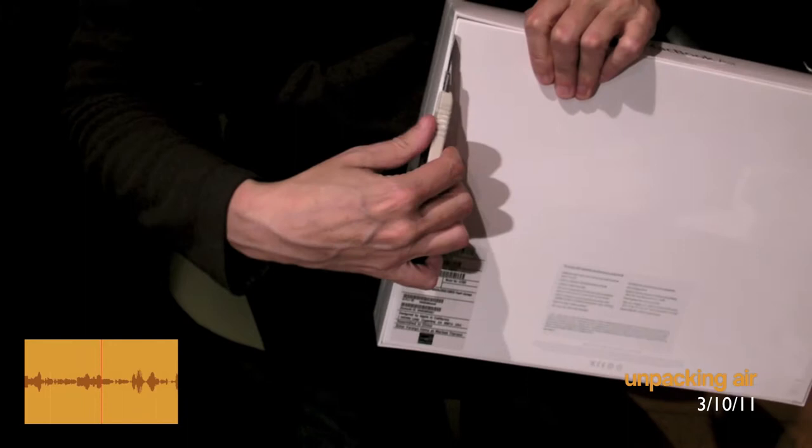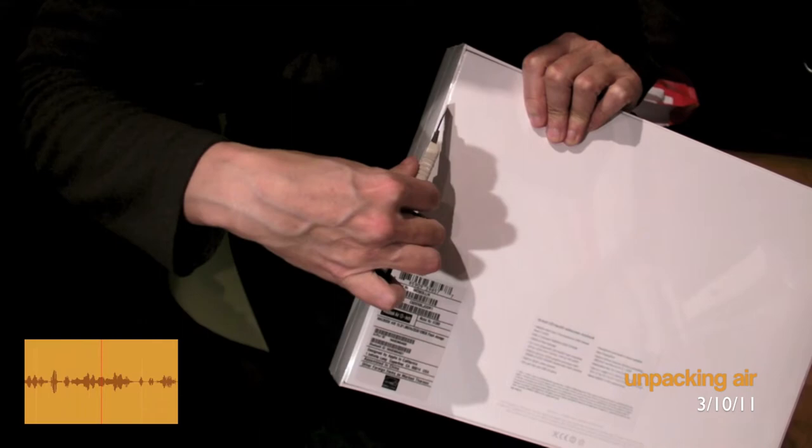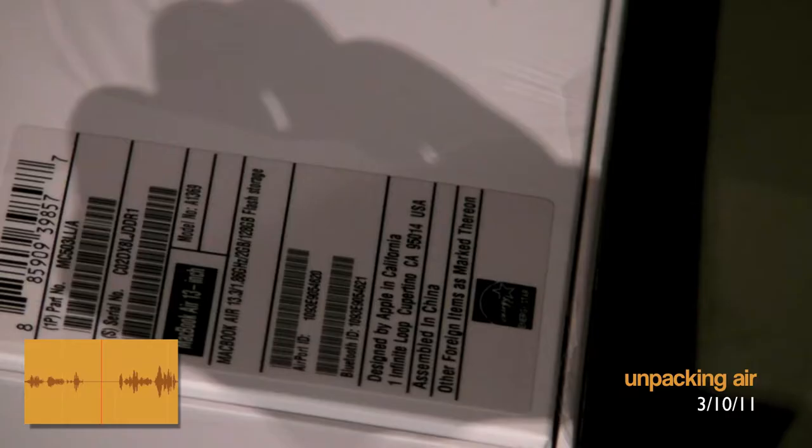This is Morning Edition from NPR News. Steve Inskeep is in Cairo. In Washington, DC, I'm Renee Montagne and I'm Ari Shapiro. Hundreds of people are dead or missing after an enormous tsunami hit Japan earlier today. That tsunami was generated by a massive 8.9 earthquake off Japan's coast.